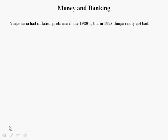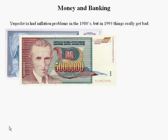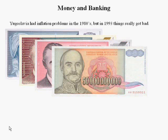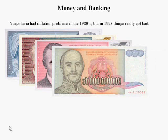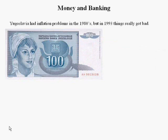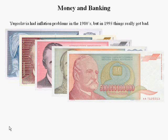Yugoslavia had inflation problems as well, but it got really out of hand in 1993. Here's a common note that the Yugoslavian Central Bank was printing. A few months later they were printing larger ones, then larger still. Maybe you used one of those to buy a Coca-Cola around 1993, and then about a year later you're using a much higher denomination to buy a Coke. Things got really out of hand really quickly.